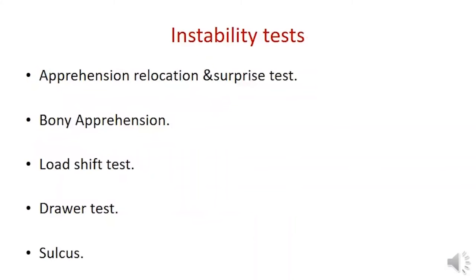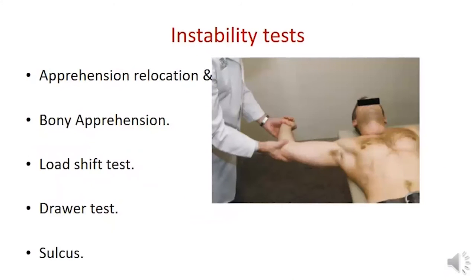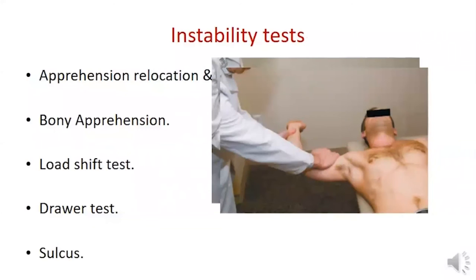Special instability tests are the apprehension, relocation, and surprise tests. The apprehension test is performed with the patient supine: the examiner abducts the arm to 90 degrees and slowly externally rotates the shoulder to 90 degrees — the test is positive if it causes any apprehension. The relocation test applies a posterior force against the humeral head, moving it from anteriorly subluxed to the center of the glenoid; it is positive if the maneuver decreases the patient's apprehension. The release or surprise test consists of sudden removal of the posteriorly directed force — it is positive when the patient feels apprehension again.